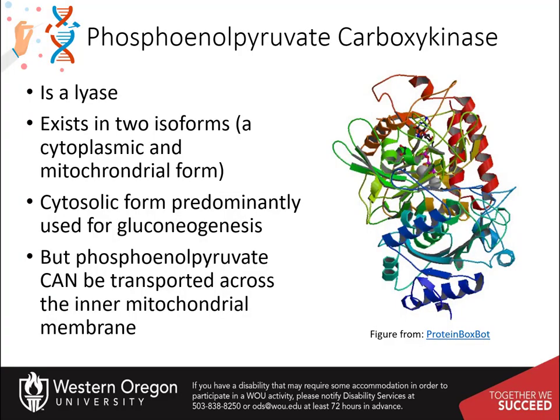Phosphoenolpyruvate carboxykinase is classified as a lyase enzyme and exists in two isozymes: a cytoplasmic phosphoenolpyruvate carboxykinase and a mitochondrial phosphoenolpyruvate carboxykinase. The cytoplasmic form is predominantly used in the gluconeogenic pathway; however, small amounts of phosphoenolpyruvate can be transported across the mitochondrial membrane.